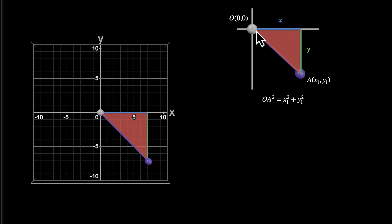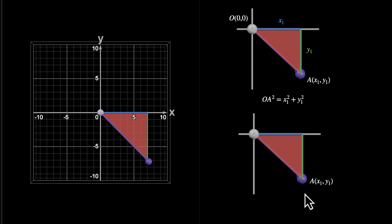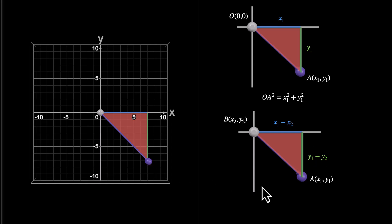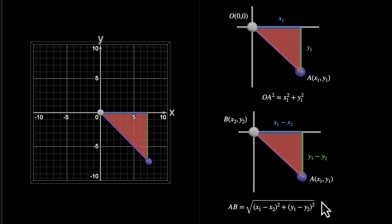If we move things around and don't start with the origin — if we have two different points (x1, y1) and (x2, y2) — this length is going to be x1 minus x2, the difference between their X coordinates, and this length is y1 minus y2, the difference between their Y coordinates. This gives us the hypotenuse AB as the square root of (x1 - x2)² plus (y1 - y2)², and this is how we prove the distance formula for two dimensions.